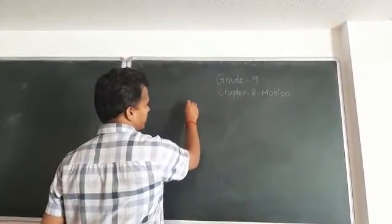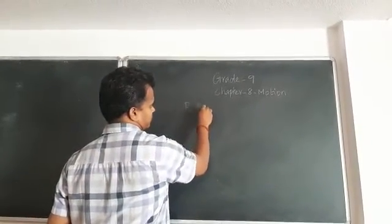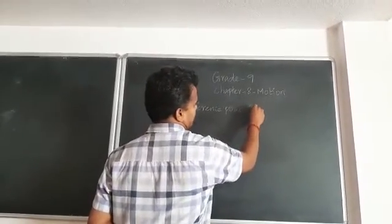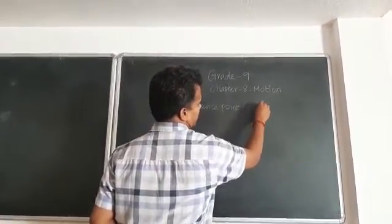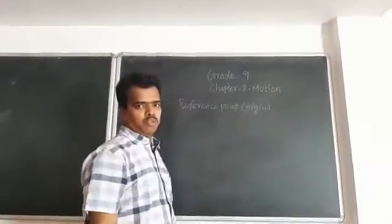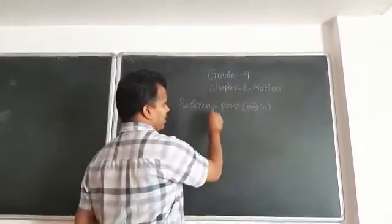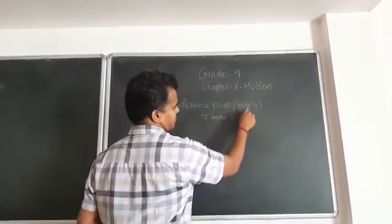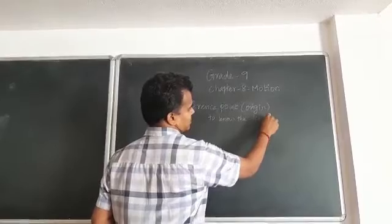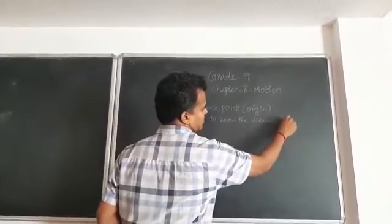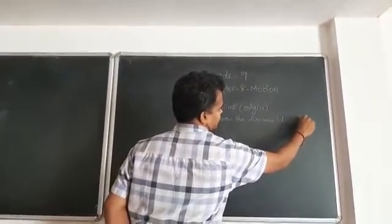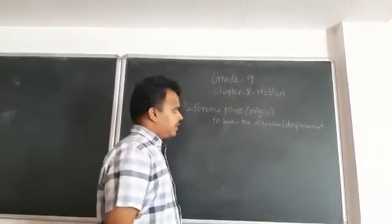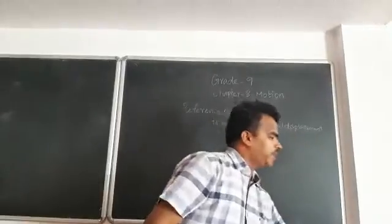We must record one key thing: the reference point, otherwise called the origin. From that origin, we can specify and understand the distance or otherwise the displacement of an object.